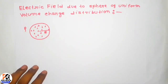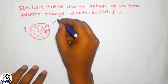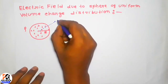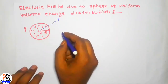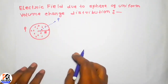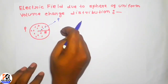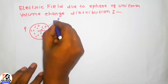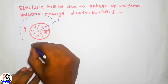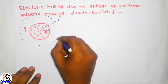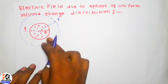First, I will calculate the electric field at a point P at distance r outside the sphere. To use Gauss's law, we have to first draw a Gaussian surface. I am taking the Gaussian surface as a sphere of radius small r.